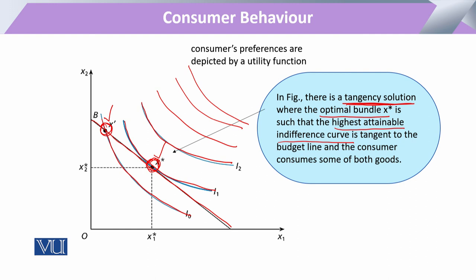Now, if due to any condition the consumer's income changes to a higher level, at this new point the consumer will have a different indifference curve coincidence. Again facing the same decision, the consumer will prefer the point that lies on a certain higher level of the indifference curve as compared to the previous point.